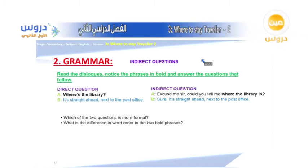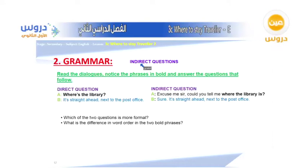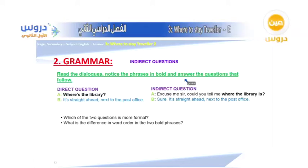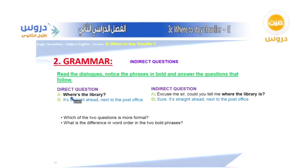Now we go to section two: grammar. The title is indirect questions. We have two types — direct questions and indirect questions. Looking at the dialogue: a direct question example is 'Where is the library?' and the answer is 'It's straight ahead, next to the post office.'